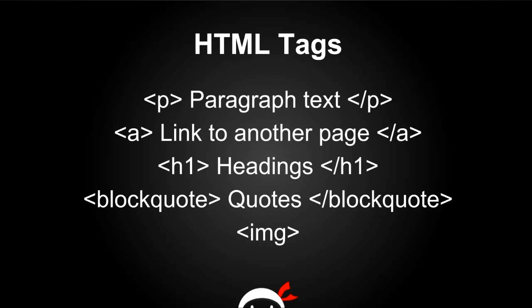Some examples: the paragraph tag — great for things like articles, you put the paragraph text between the tags. Next is the anchor tag, or 'a' tag, used for links — if you've got navigation with lots of links, you use anchor tags. Then there's the h1 tag for headings, which range from h1 (most important) down to h5 (least important). There's also a blockquote tag for displaying quotes. Finally, the image tag is a bit different — it's self-contained, meaning it doesn't need a separate closing tag because all the information needed to display the image is within the opening tag itself.